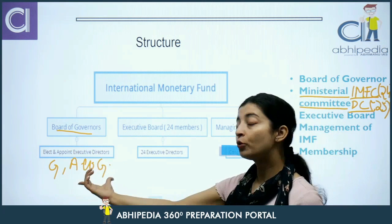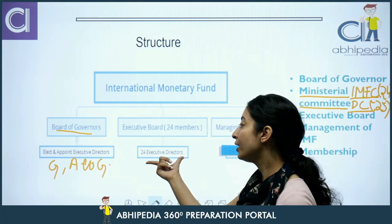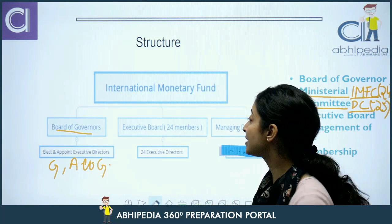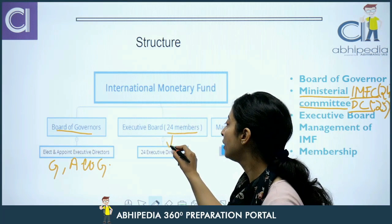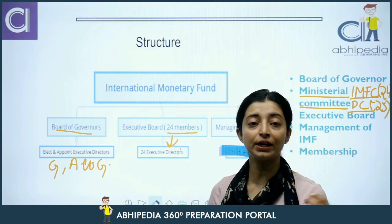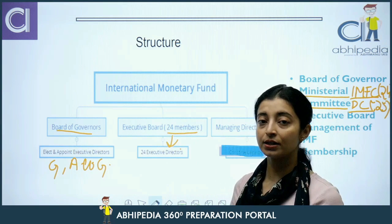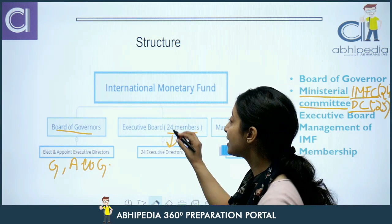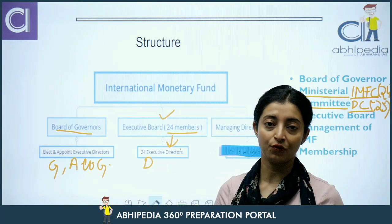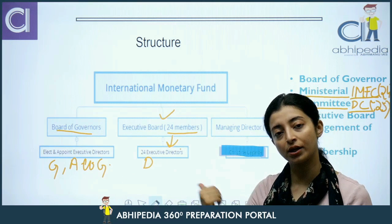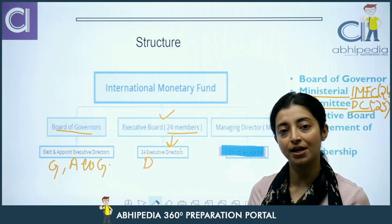Board of Governors ka ek aur kaam hai — yeh appointment of Executive Directors karti hai. Executive Directors jo hain, woh Executive Board ki members hoti hain — 24 in number. Inka jo election ya appointment hota hai, usko bhi Board of Governors karta hai. Executive Board ka kaam kya hai? Yeh day-to-day functions carry out karta hai IMF ke — jo day-to-day functions hain, unko carry out karna Executive Directors ka kaam hai.